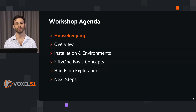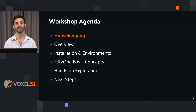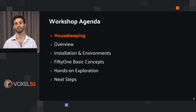Today's workshop is going to be structured as follows. First, we'll do some quick housekeeping. Then we'll do an overview — what FiftyOne is, the FiftyOne app, how it all works. Then we'll do installation and environments and talk about how to get set up for success. We'll follow that up with some basic concepts — the structures and concepts that underlie the FiftyOne query language and allow you to better understand and filter your data. Then we'll do a hands-on exploration where you will write Python code and explore FiftyOne yourself. We'll conclude with next steps and give you some resources that will help you progress on your journey with FiftyOne.